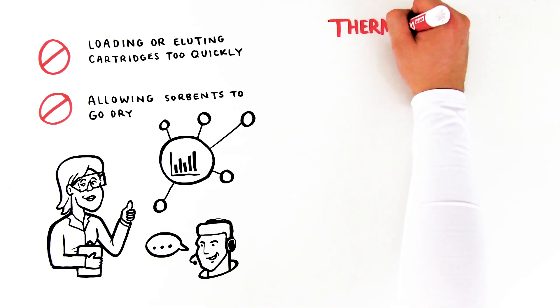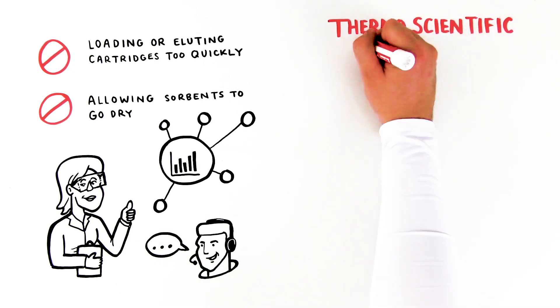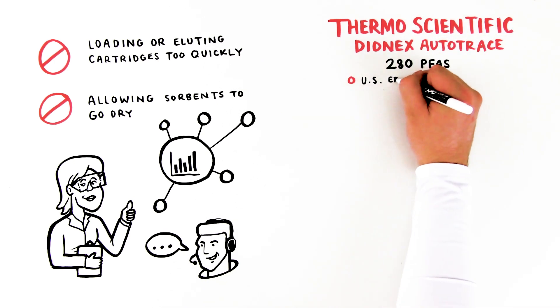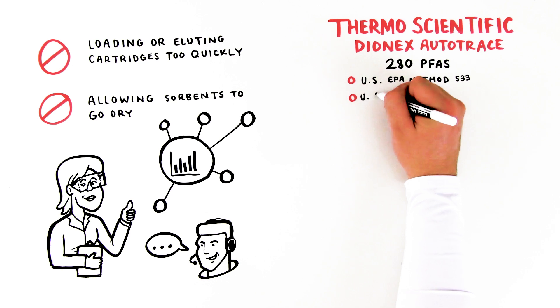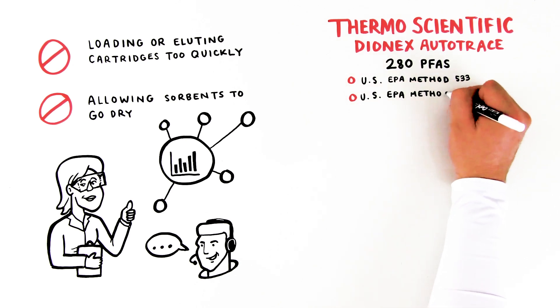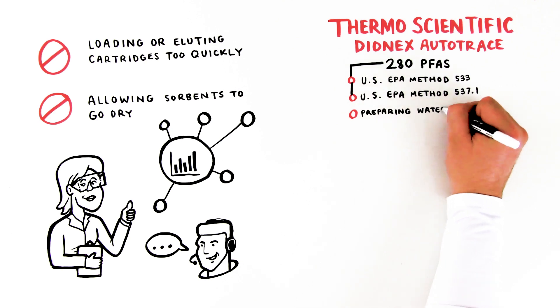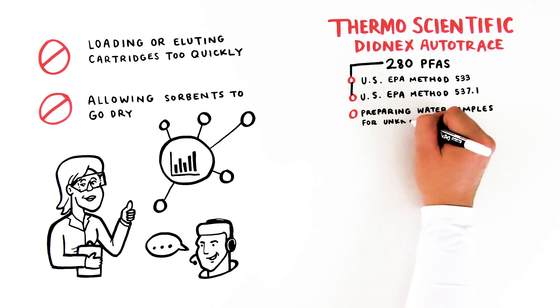Dionex AutoTrace 280 PFAS is designed to automate SPE for US EPA Method 533 and US EPA Method 537.1 or similar PFAS extraction methods. The AutoTrace 280 PFAS can also be used for preparing water samples for the discovery of unknown PFAS.